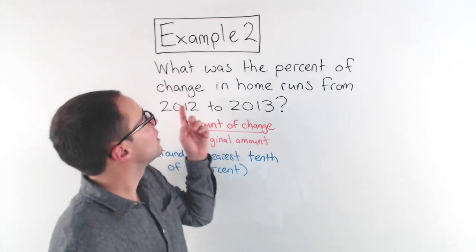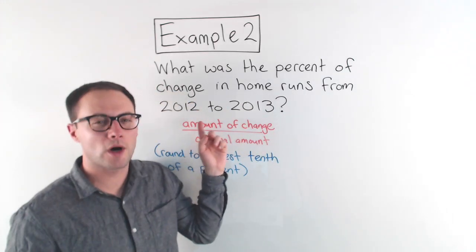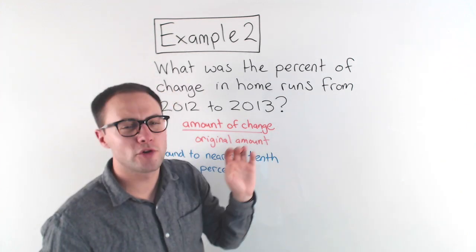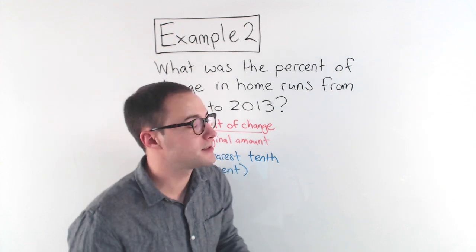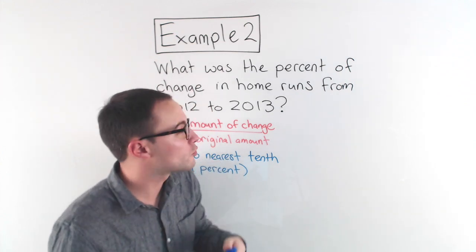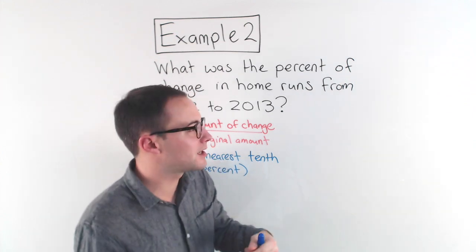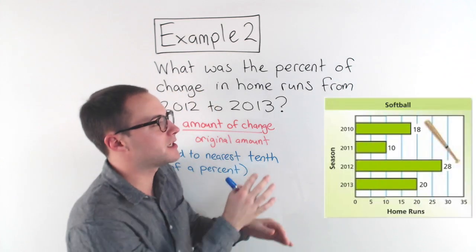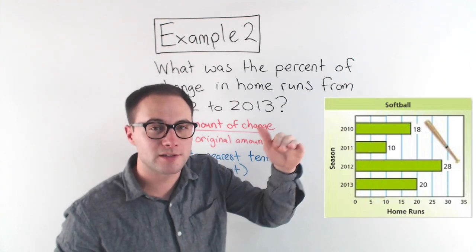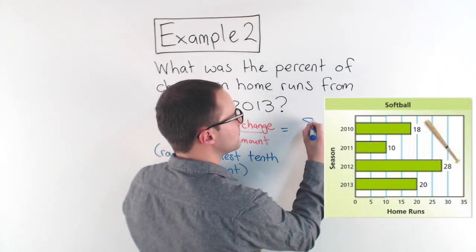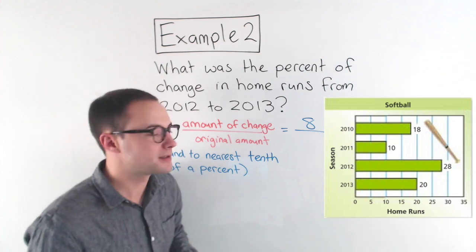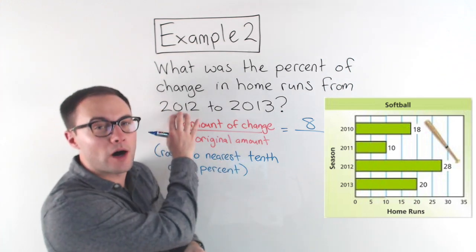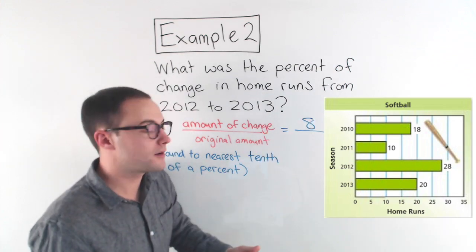Example two: What was the percent of change in home runs from 2012 to 2013? In 2012 there were 28 home runs; in 2013 there were only 20. Right off the bat, this is going to be a percent decrease. The amount of change from 28 to 20 was eight — it decreased by eight home runs. The original amount is 2012, which was 28 home runs.